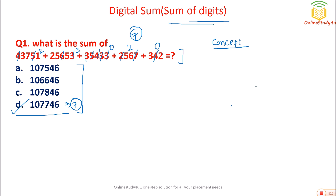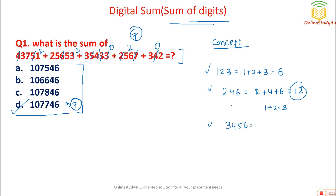Digital sum is the sum of digits. To calculate it, add all the digits. For example, 1 plus 2 plus 3 equals 6. For 2, 4, 6: 2 plus 4 plus 6 equals 12, which is a two-digit number, so add again to get a single digit. For 3, 4, 5, 6: 3 plus 4 plus 5 plus 6 equals 18, and 1 plus 8 equals 9. We must always reduce to a single digit.